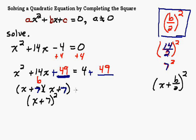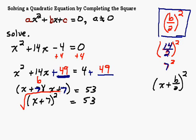On the right-hand side we have 53, because 4 plus 49 is 53. So once we get this perfect square trinomial — that's the first step, make the perfect square trinomial — the next step is to take the square root of both sides.